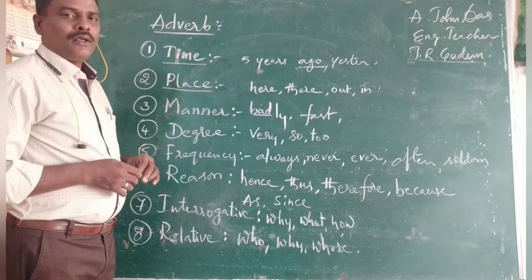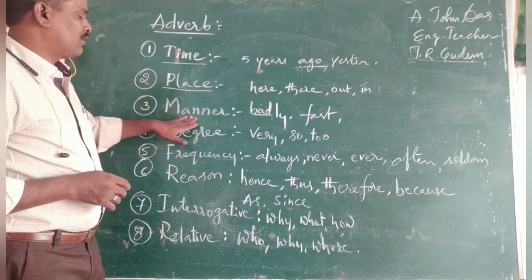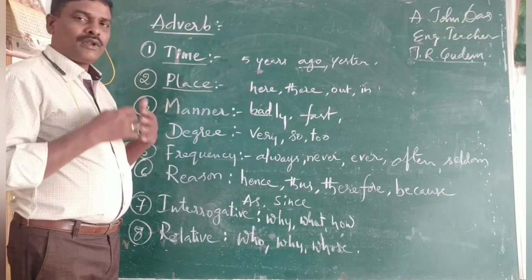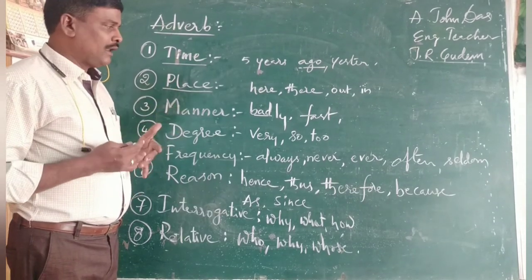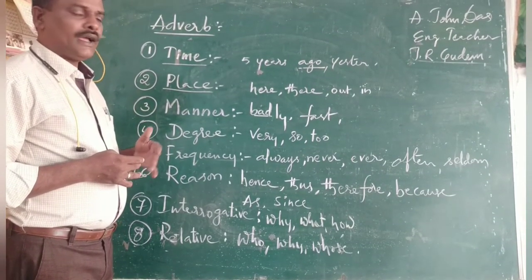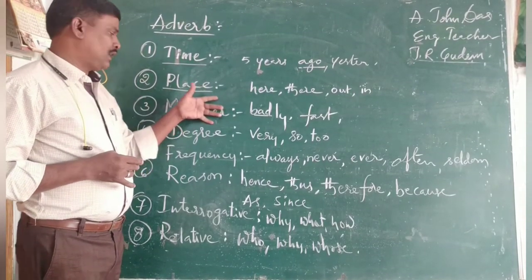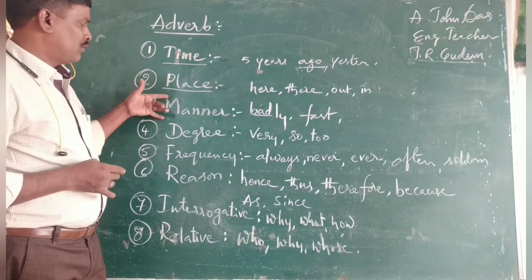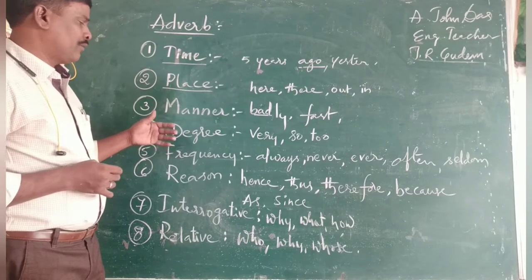Adverbs of manner — manner means how hard or how soft you are telling about the person's manner. For example: 'badly,' 'I came fast,' 'I came slowly,' and so on. This describes the manner of the action.